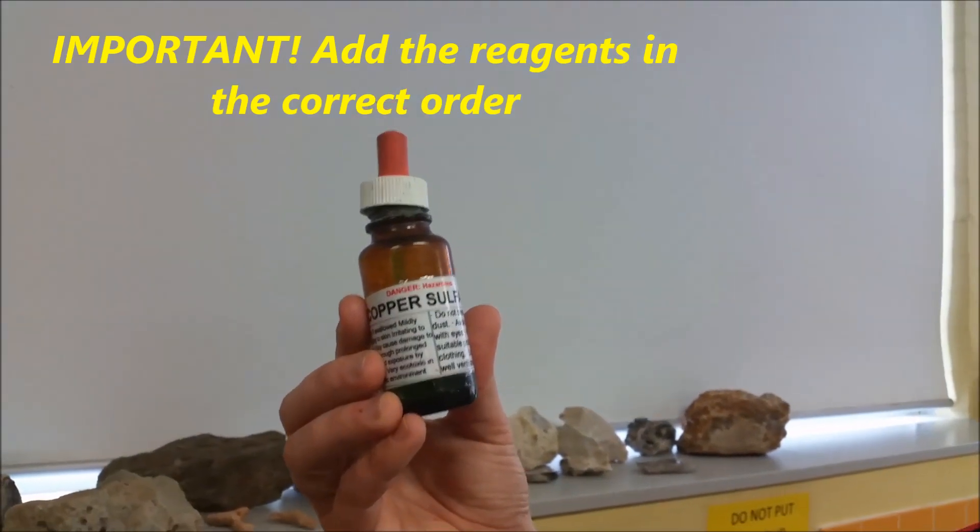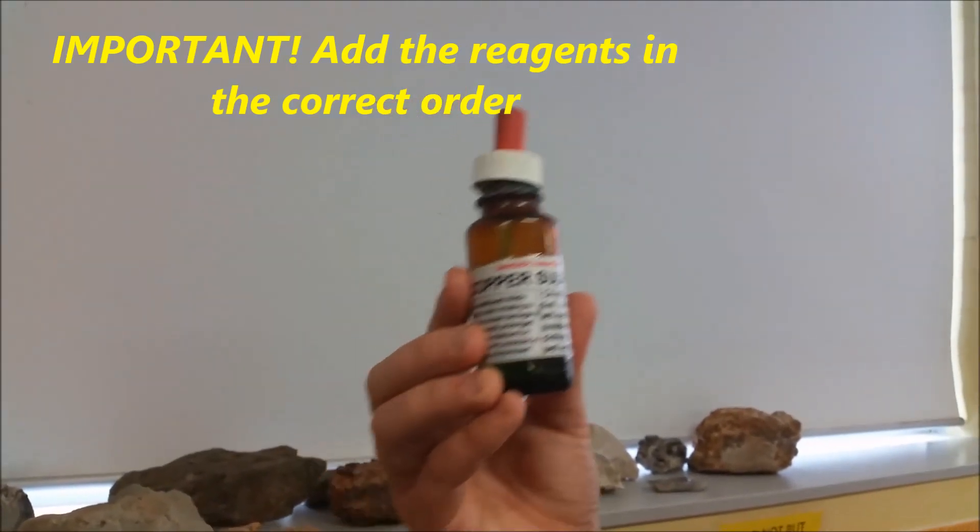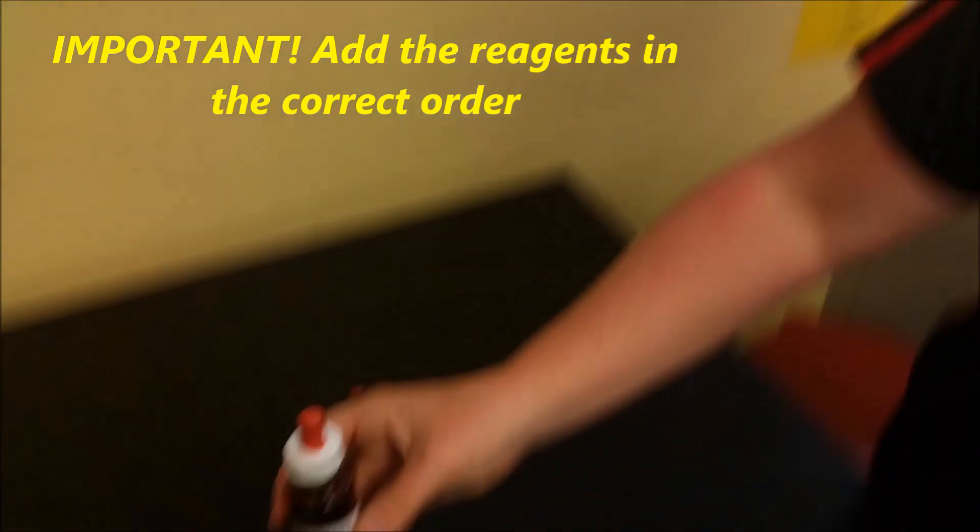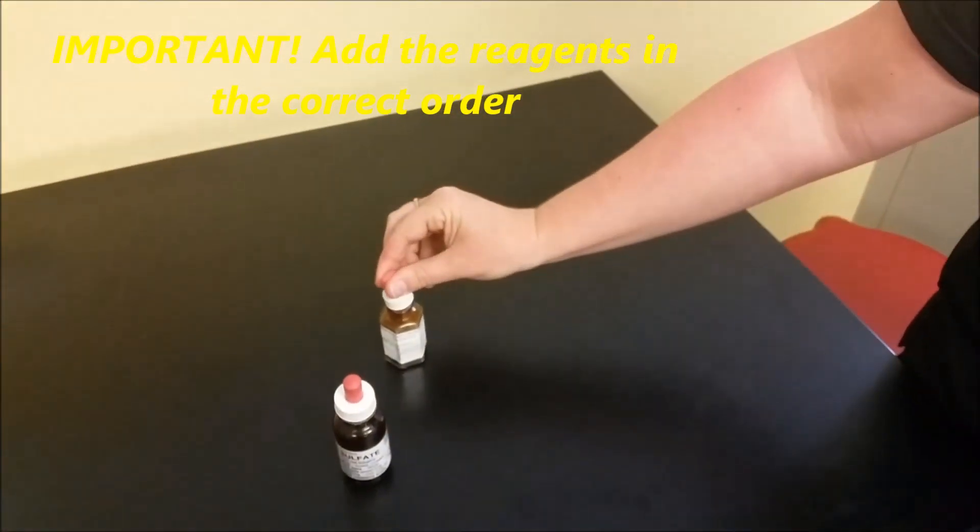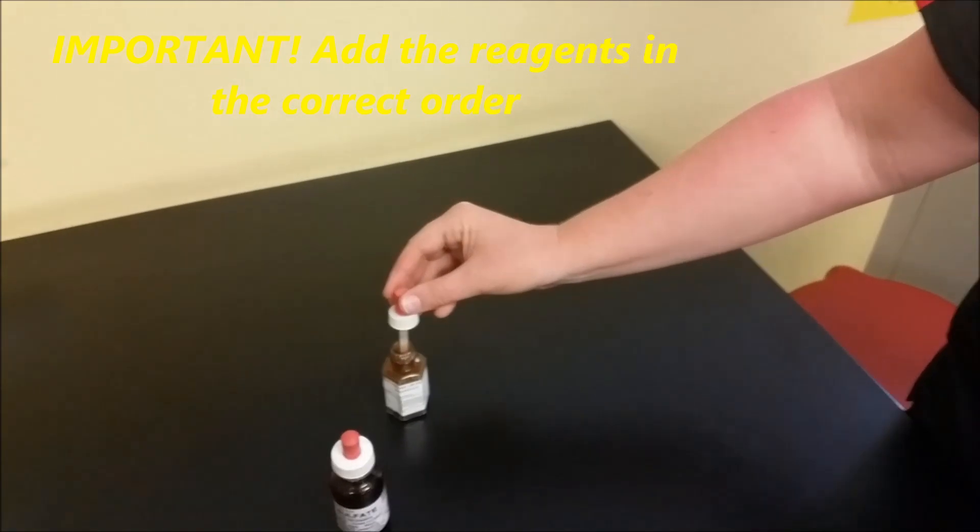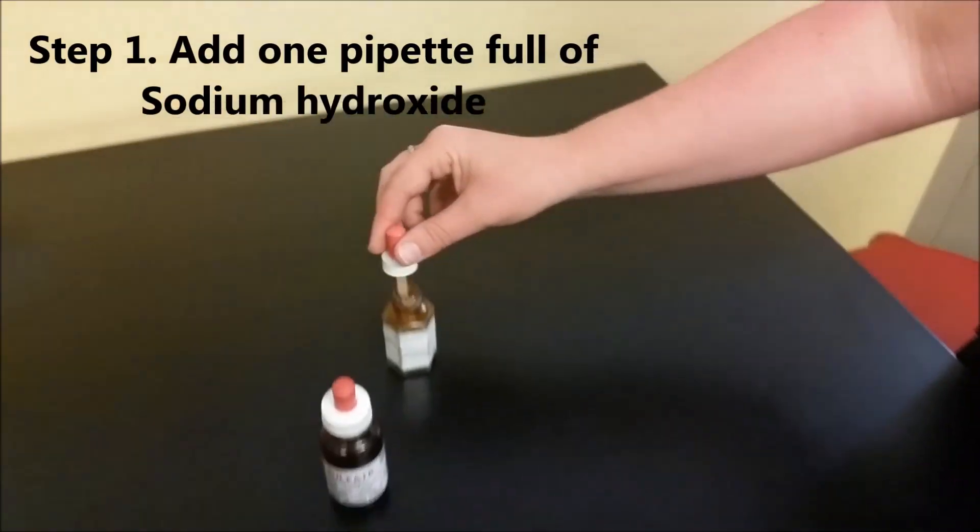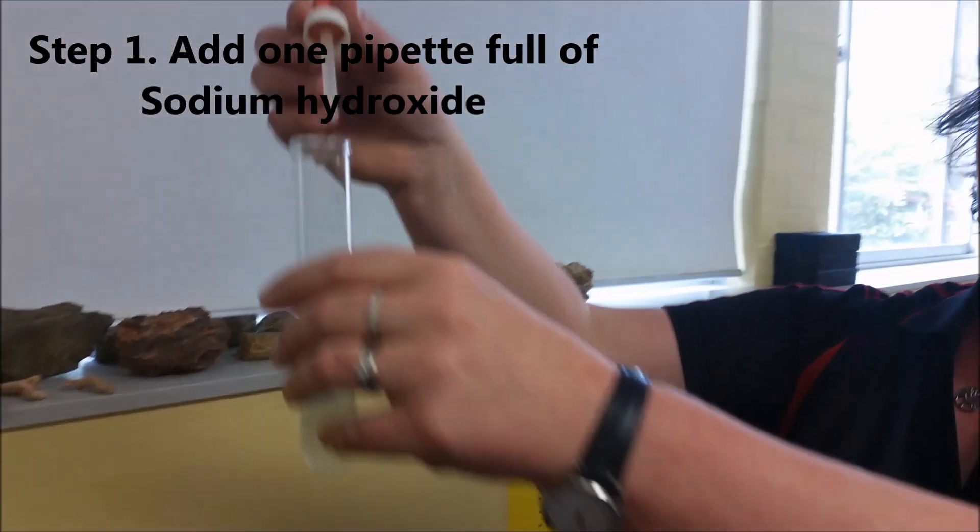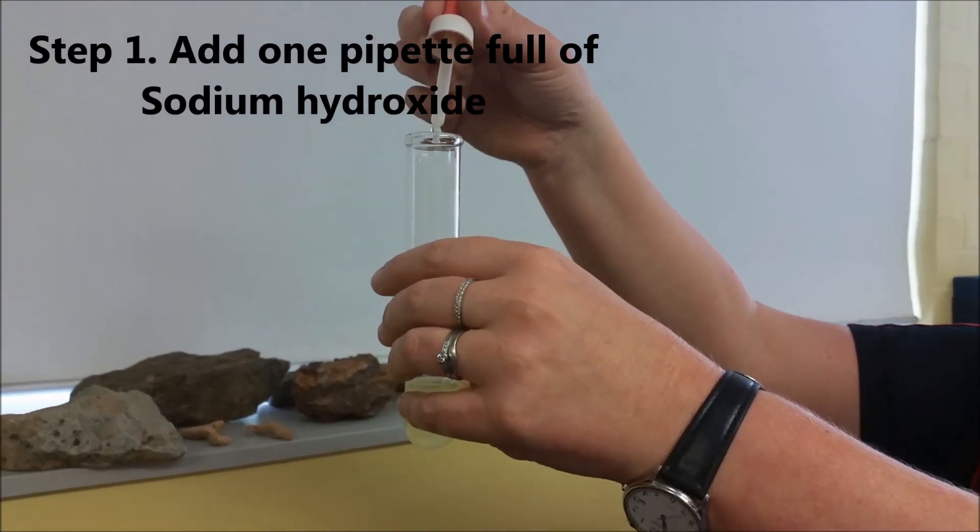Make sure that they are in separate trays, make sure you get one of each. When you do the protein test, it's important that you add these in the correct order. The first step is you add one pipette full of the sodium hydroxide.